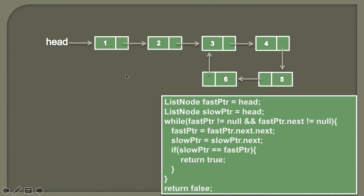Let's suppose we are given a linked list having six nodes — 1, 2, 3, 4, 5, 6 — which contains a loop. The head points to the first node, first points to second, second to third, third to fourth, fourth to fifth, fifth to sixth, and sixth points back to third. Therefore this linked list contains a loop: three points to four, four to five, five to six, and six back to three, and so it goes on.